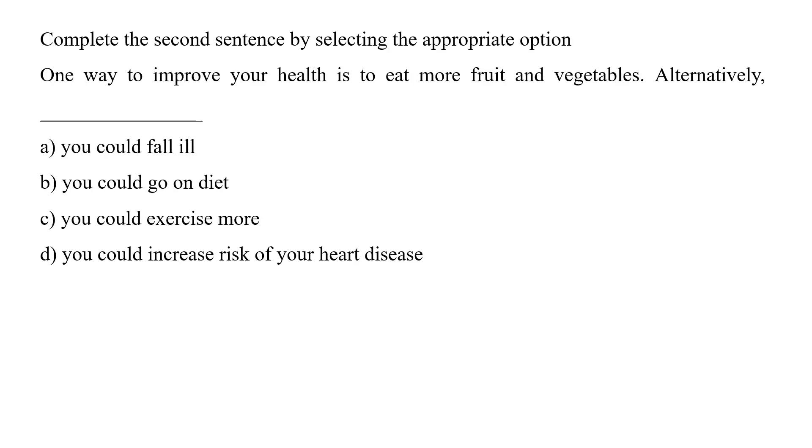Complete the second sentence by selecting the appropriate options. One way to improve your health is to eat more fruit and vegetables alternatively. You could exercise more. So option C would be the correct answer. That one way to improve your health is to eat more fruits and vegetables. Alternatively, you could exercise more.